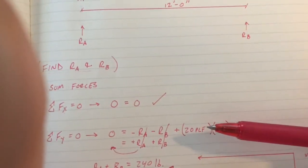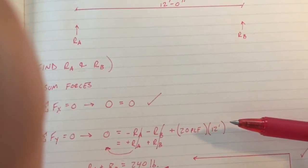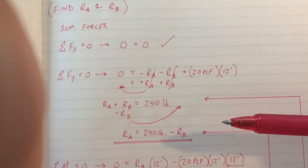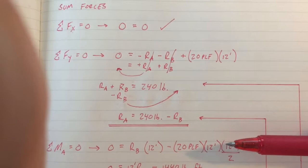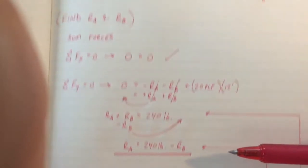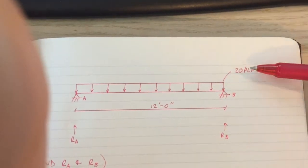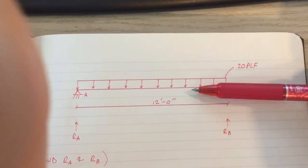Next we have the 20 pounds per lineal foot applied to the beam multiplied by its length of 12 feet. That's your force. 20 PLF times 12 feet.